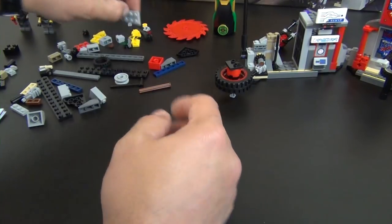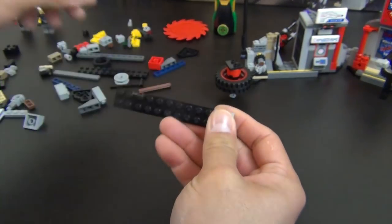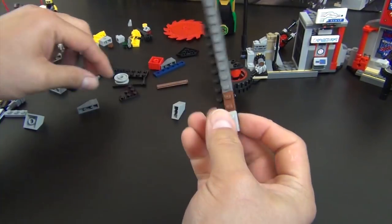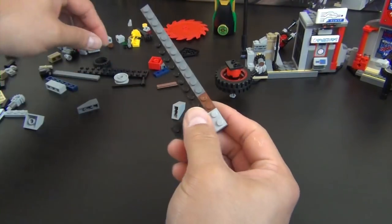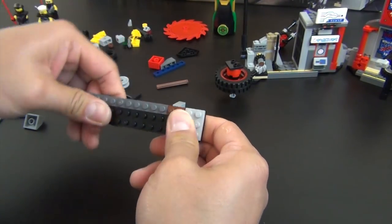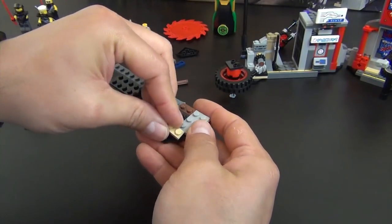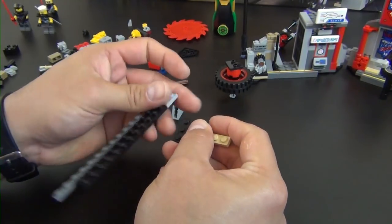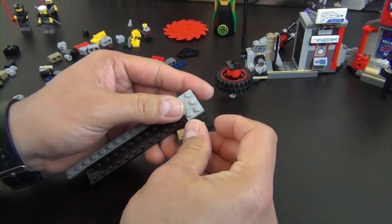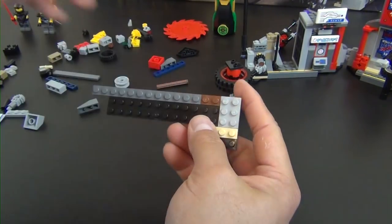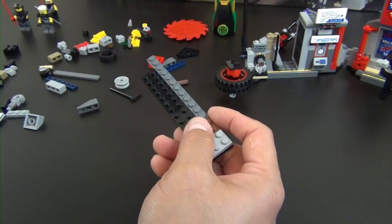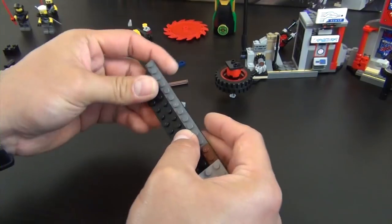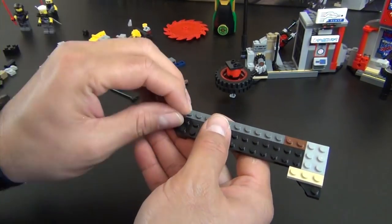Alright, so we're on to our last portion. It's going to start off very similar. You don't want to put that wedge plate on wrong. It should be like this. There we go, looks better.